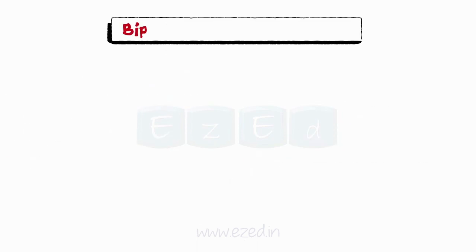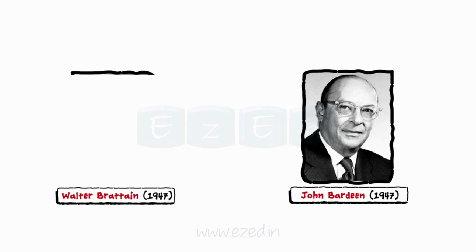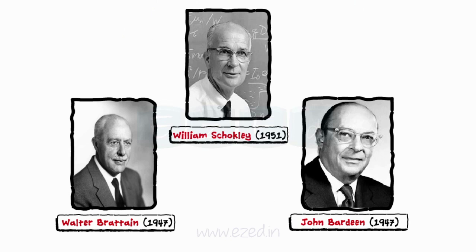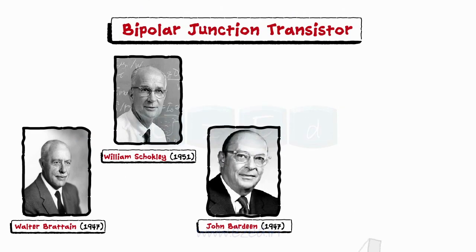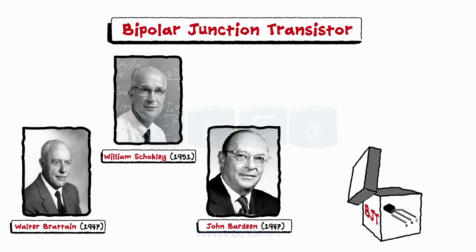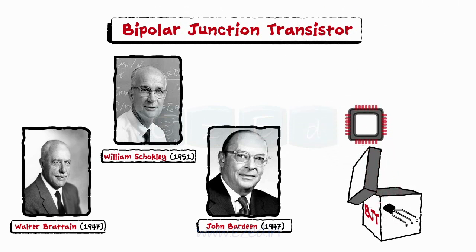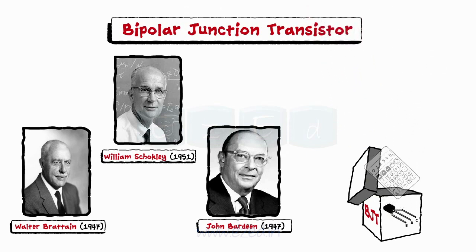The bipolar junction transistor was invented in 1947 by John Bardeen and Walter Brattain. In 1951, William Shockley made the modern version of a transistor. This invention completely revolutionized the electronics industry, and the transistor found widespread applications in computer chips, communication satellites, calculators, etc.